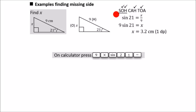When working out a side, you use this version of the rule. Sine angle equals opposite over hypotenuse, which means sine 21 equals x over 9.